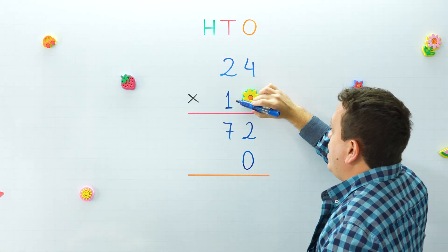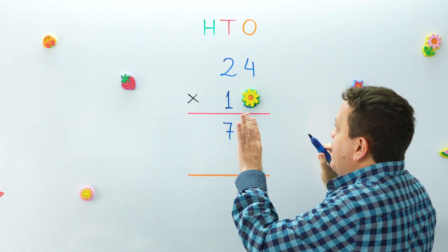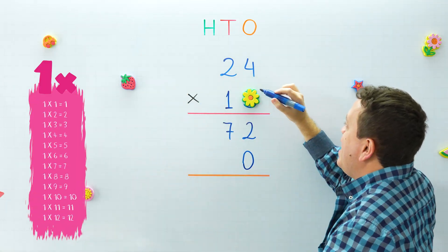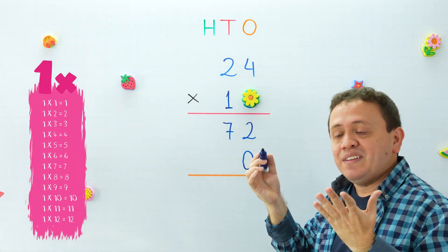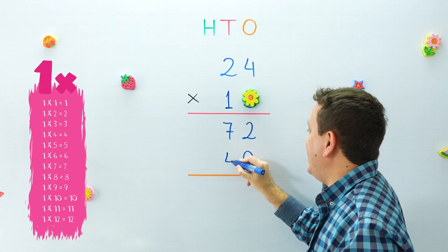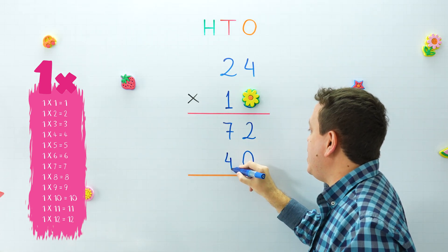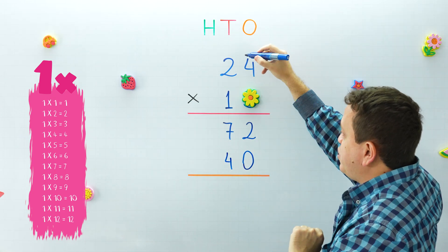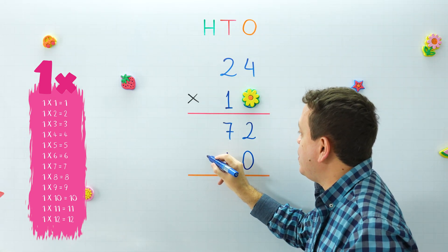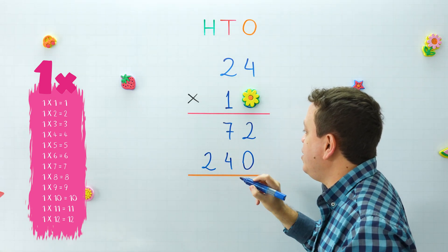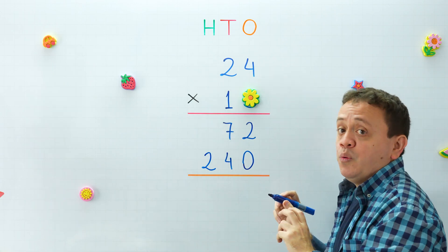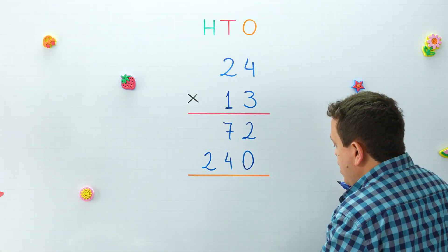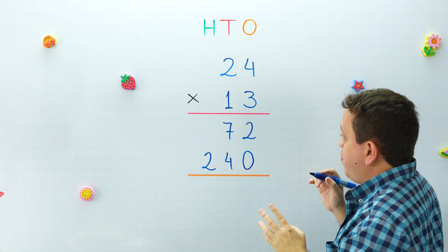Now we multiply one times four and then we move to the left. One times four equals four. We move to the left: one times two equals two. We finish with the second step.